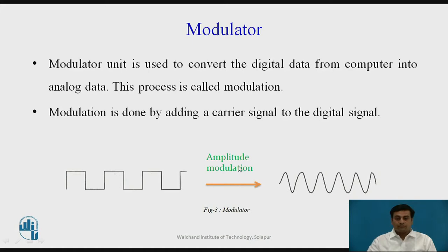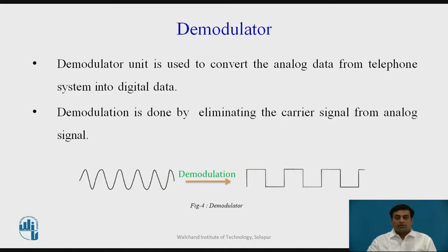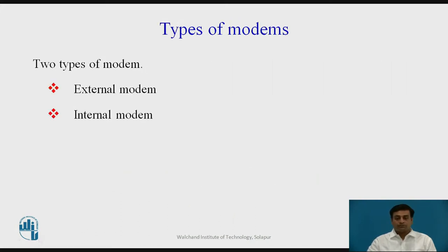The demodulator is also a unit in a modem which is used to convert the analog data received from the telephone lines into digital, and those digital signals are provided to the computer. Demodulation is done by eliminating the carrier signal from the received analog signal. Figure 4 shows the demodulation process.